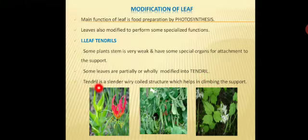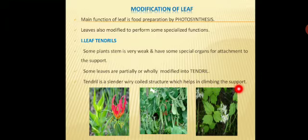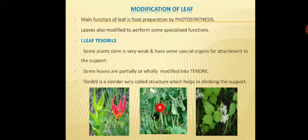A tendril is a slender, wiry, coiled structure which helps in climbing the support. Examples of leaf tendrils include Gloriosa superba, Pisum sativum (pea), and Naravelia. These are some examples of plants with leaf tendrils.